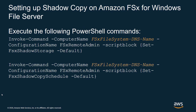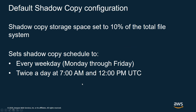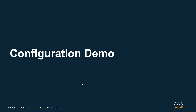Once you've done that, you launch PowerShell and execute two commands. The first command invokes a command running on the FSx host — the script block sets FSx shadow copy storage to the default configuration. The second command sets the shadow copy schedule to the default. When set to default, the shadow copy storage space is set to 10% of total file system storage, and the default schedule runs backups Monday through Friday, twice a day at 7 AM and 12 PM UTC time. With that, let's jump into a demo and walk through the setup.